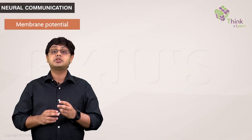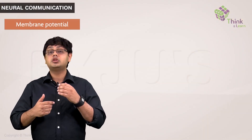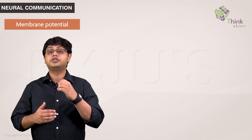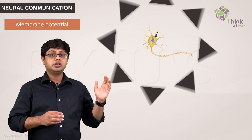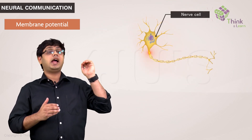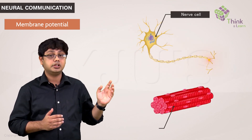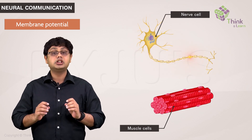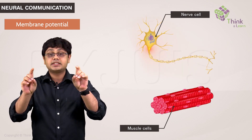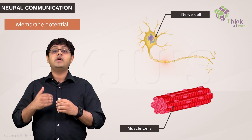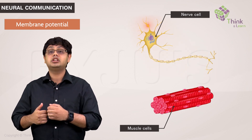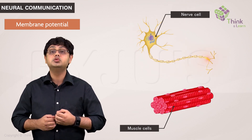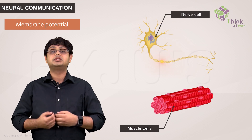Two types of cells take advantage of this difference to get their work done. The nerve cells and the muscle cells. Nerve and muscle cells are considered to be excitable tissue because when they get excited, they change their resting potential to produce electrical signals.